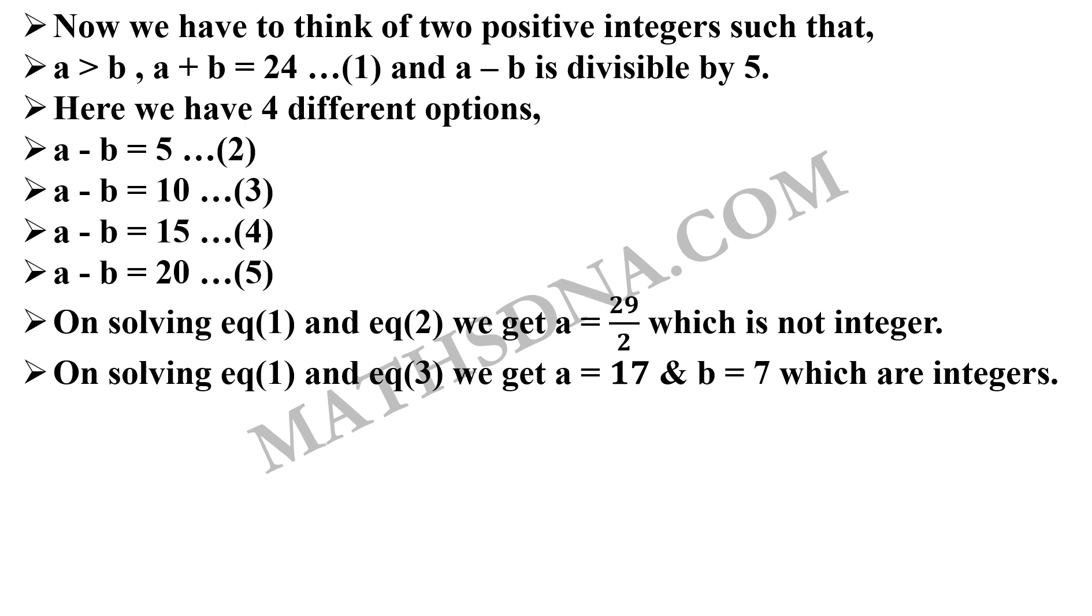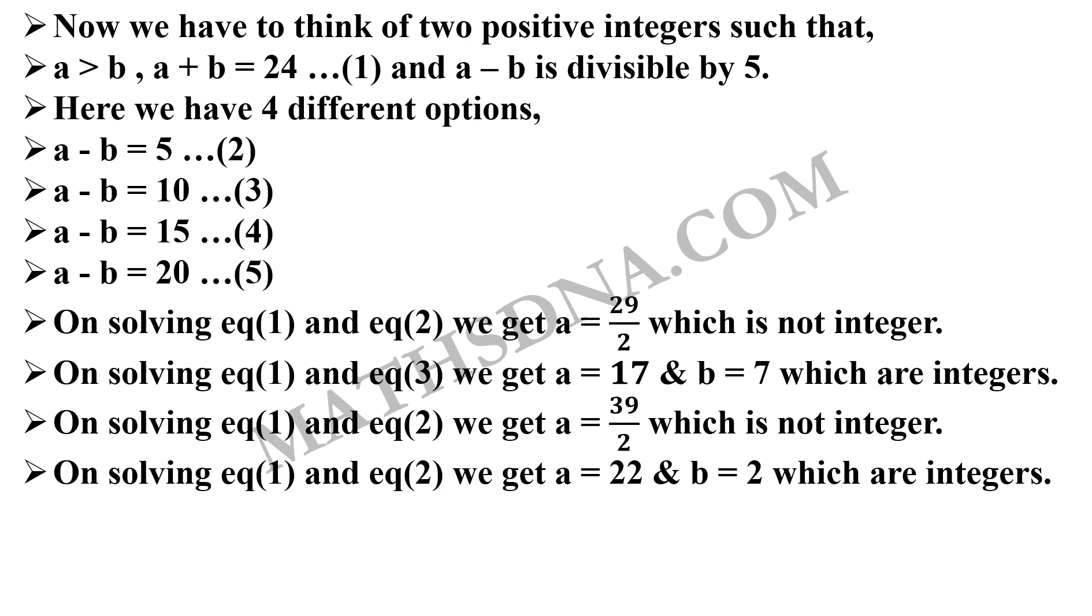Now, for equation 1 and equation 4, we get a is 39 by 2 which is again not an integer, and for equation 1 and equation 5, we get a is 22 and b is 2 which are integers. So, we got 2 possible pairs of a and b that is 17 and 7 and 22 and 2. This pair will be helpful to us in simplifying the other 3 options.